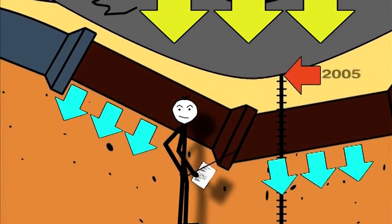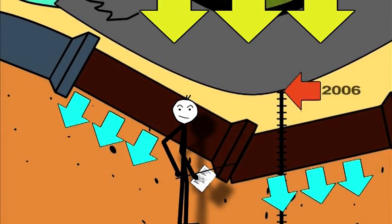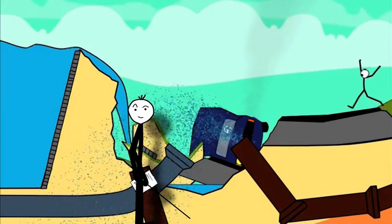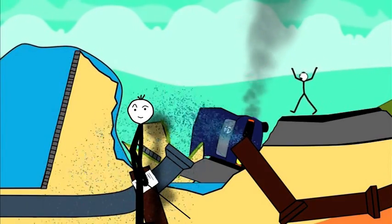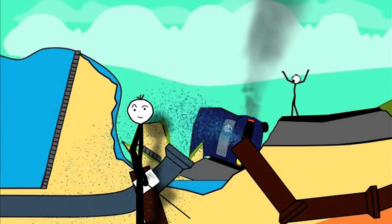If such soil settlements have not been taken into account at the design stage of the pipeline, then the angular rotations in the coupling sockets become too large and the pipeline will fail.